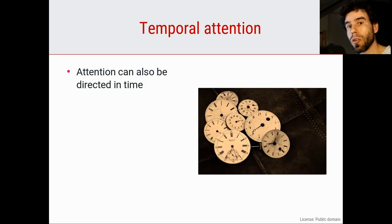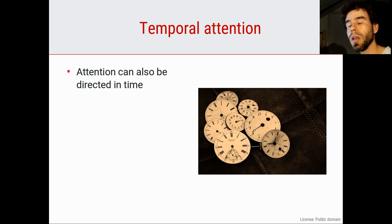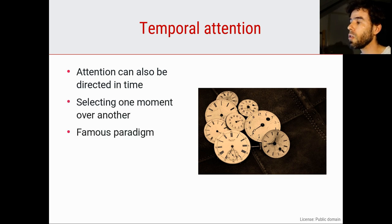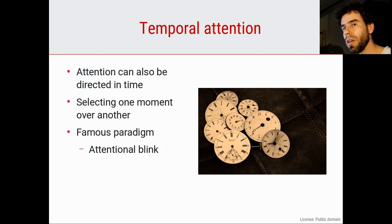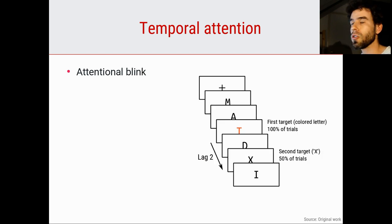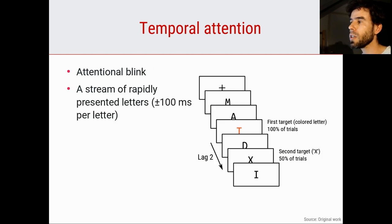Attention cannot only be directed in space, as we saw in the Posner cueing paradigm, but it can also be directed in time — selecting one moment over another moment. A very famous paradigm to test this is the attentional blink paradigm. This is a bit of a strange paradigm, so take a moment to think about the logic behind it. How it works is that participants see a stream of very rapidly presented letters — for example, 100 milliseconds per letter.